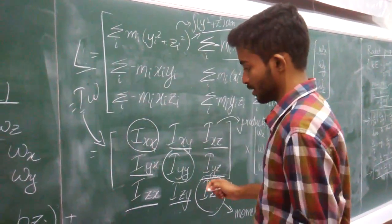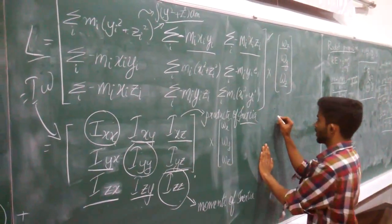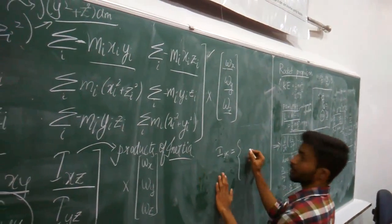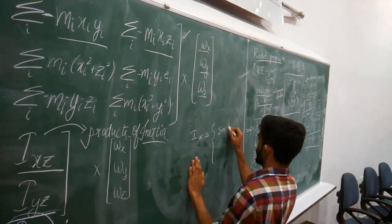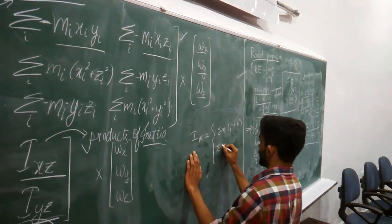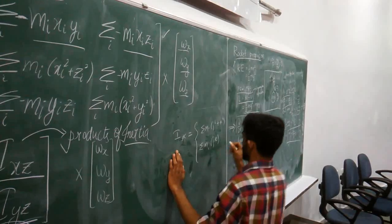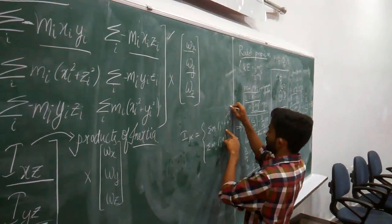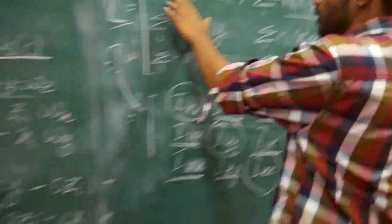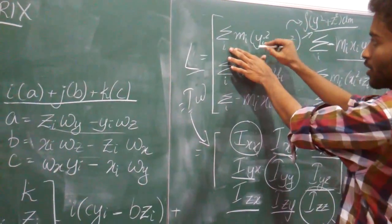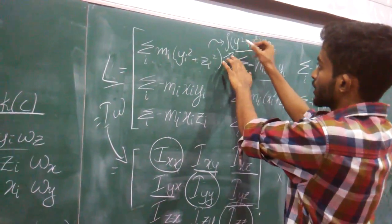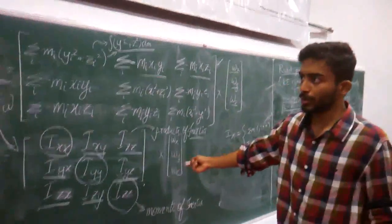We can see that I_(j,k) = Σ m_i × (j² + k²) when j = k, and -Σ m_i × j·k when j ≠ k. We can also transform this discrete particle equation to a continuous form: Σ m_i × (y_i² + z_i²) becomes ∫(y² + z²) dm. This is the final moment of inertia matrix, and we have successfully derived it.